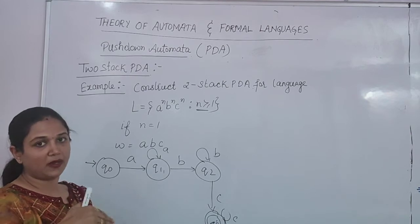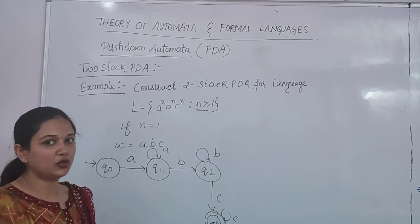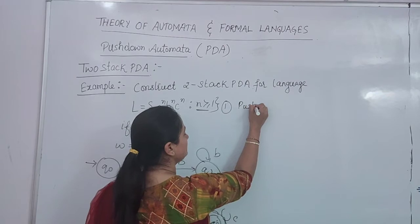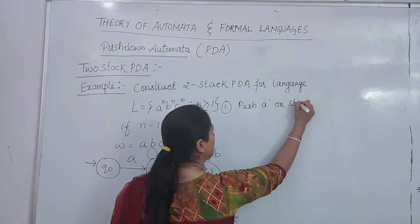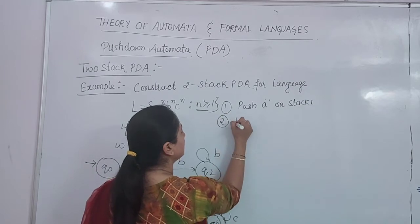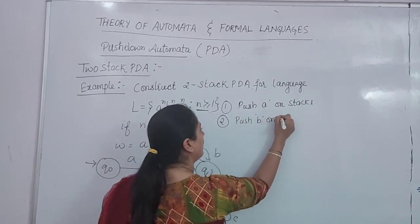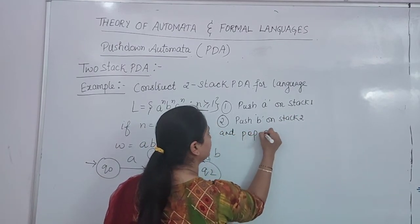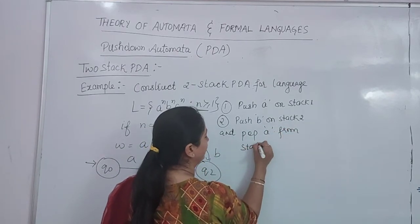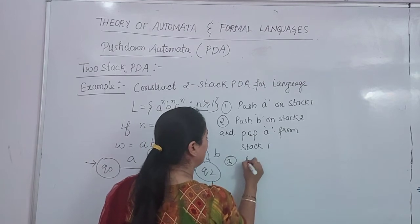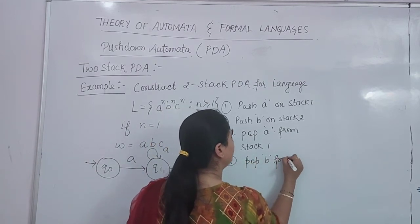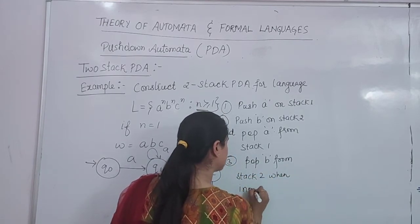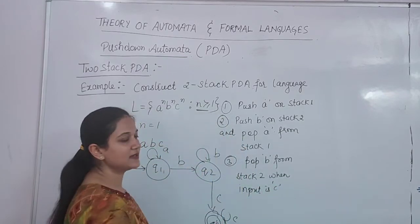The first rule is to push A on stack 1. Second rule: push B on stack 2 and pop A from stack 1. Third rule: pop B from stack 2 when the input is C. So these are the 3 things that we have to implement.